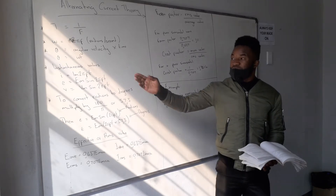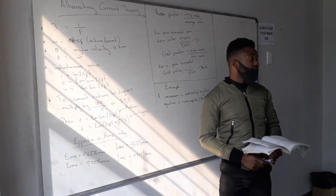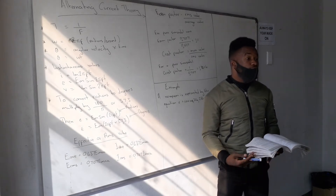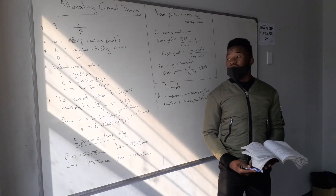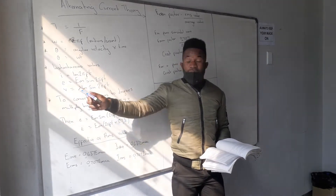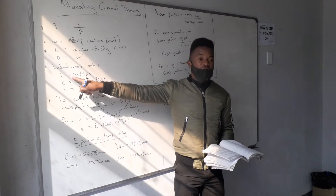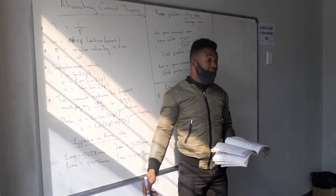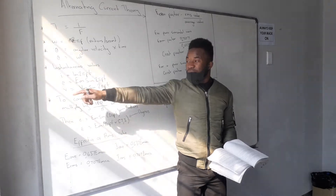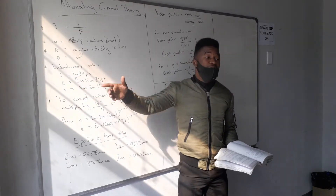You also have the formula: theta equals omega multiplied by time. And then there's what we call the instantaneous value. The instantaneous value of the current is: i equals the maximum current multiplied by sin(2πft). The first value in the equation is always the maximum value — it can be maximum current or maximum voltage.